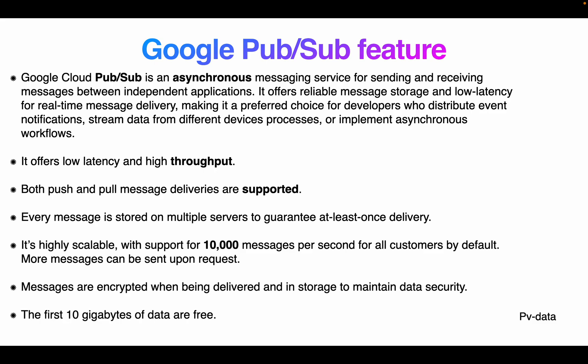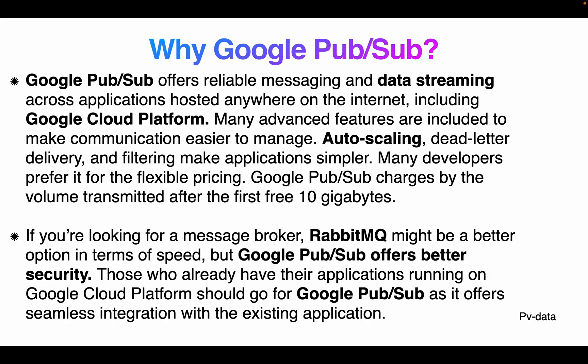More messages can be sent upon request. Messages are encrypted when being delivered for data security. The first 10 gigabytes of data is free. Google Pub/Sub offers reliable messaging and data streaming across applications hosted anywhere on the internet, including GCP. Many advanced features are included to make communication easier, such as auto scaling, data-related delivery, and filtering to make applications simpler.